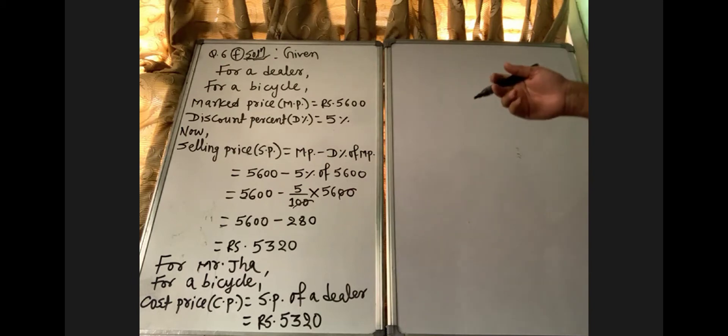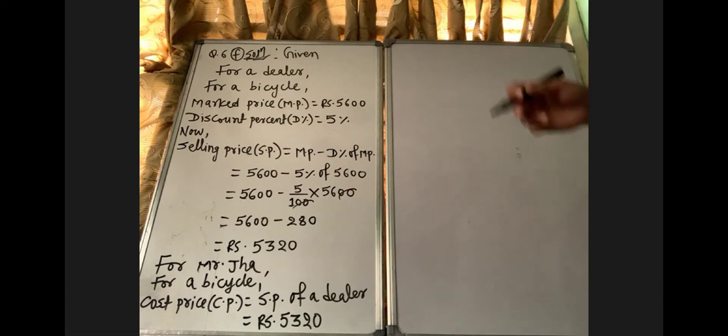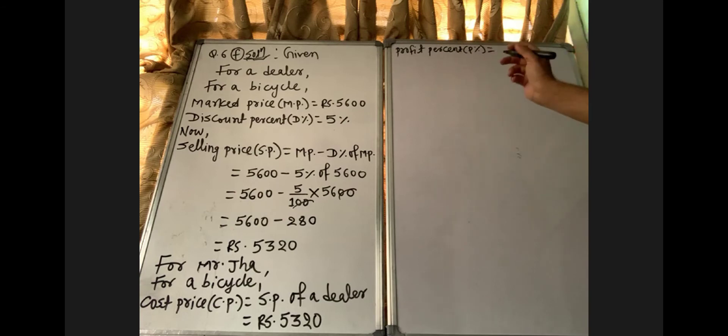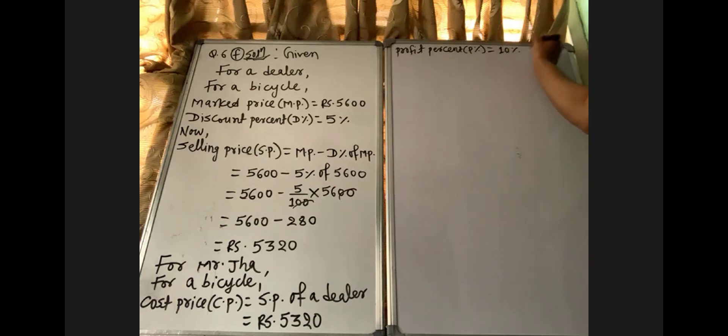Now, profit percent is also given. Mr. Zha purchased a bicycle costing Rs 5600 from a dealer at 5% discount and sold it at a profit of 10%. So profit percent (P%) equals 10%.